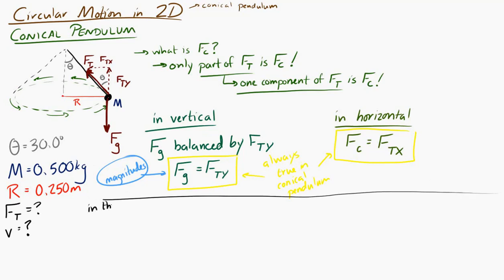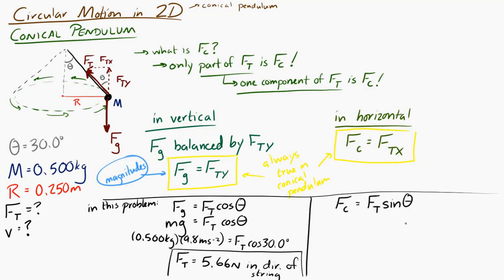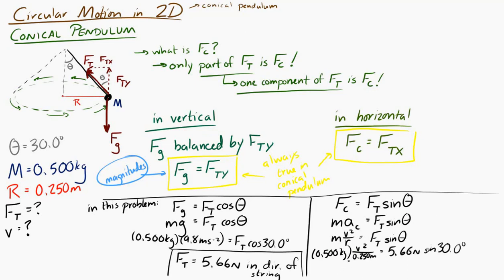Using the vertical equation: weight equals FT·cos(θ), so Mg = FT·cos(θ). Plugging in the numbers gives a tension force of 5.66 newtons. Then, using the horizontal equation: the centripetal force equals FT·sin(θ), and the centripetal force equals MV² / R. Knowing the mass, radius, tension, and angle, we can solve for V and get 1.19 meters per second.